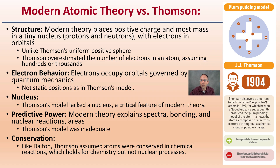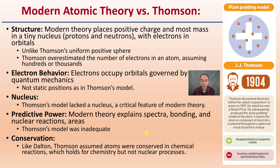How does his theory relate to the modern day? Modern theory places most of the positive charge and mass in a tiny nucleus with protons and neutrons, with electrons in orbitals. While Thompson did propose a positive interior, he envisioned it as a positive sphere rather than a small dense nucleus. Thompson also overestimated the number of electrons, assuming hundreds or thousands per atom. Electrons occupy orbitals, not the static positions Thompson proposed, and his model lacked a nucleus entirely. Thompson's model doesn't explain bonding or nuclear reactions. But like Dalton, he assumed atoms were conserved in chemical reactions, which holds true in chemistry but not in nuclear processes. We can see we're getting one step closer to the development of the accepted modern atomic theory.